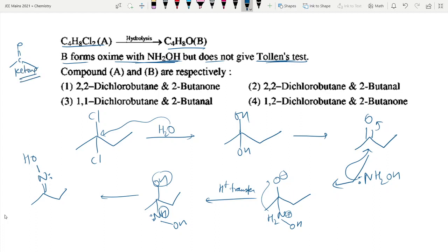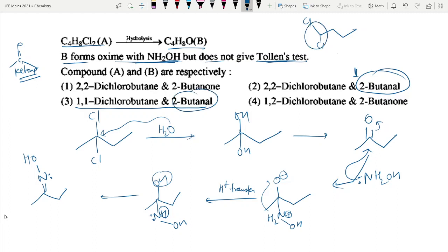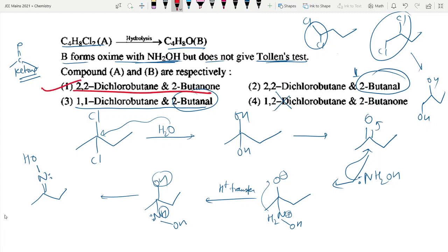The first option — 2,2-dichlorobutane on hydrolysis giving a ketone — is correct. The second option, 2,2-dichlorobutane giving 'butanal,' is wrong: butanal would require 1,1-dichlorobutane. For 1,2-dichlorobutane, hydrolysis gives a vicinal diol, which is stable and not converted into an aldehyde or ketone. So the first option is the correct answer.